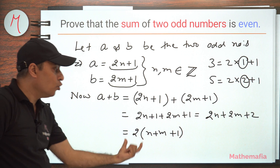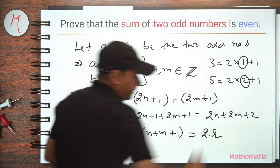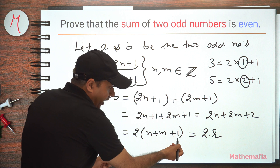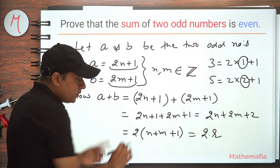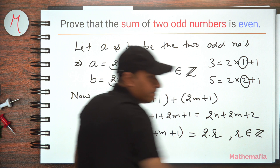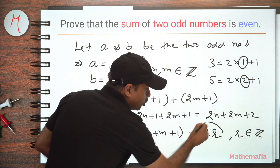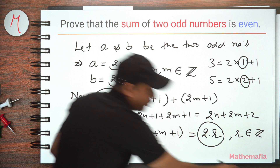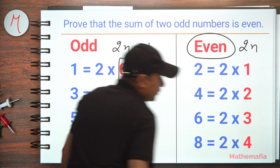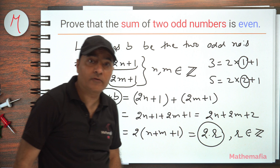Now we can take two as a common factor, giving us 2(n plus m plus one). This is again of the form 2 times an integer, so I can write it as 2r where r equals n plus m plus one. Since n is an integer, m is an integer, and one is an integer, their sum is also an integer — so r also belongs to the set of integers. Therefore, their sum is of the form 2 times an integer, which means it is an even number. Hence we conclude that the sum of any two odd numbers is always even.